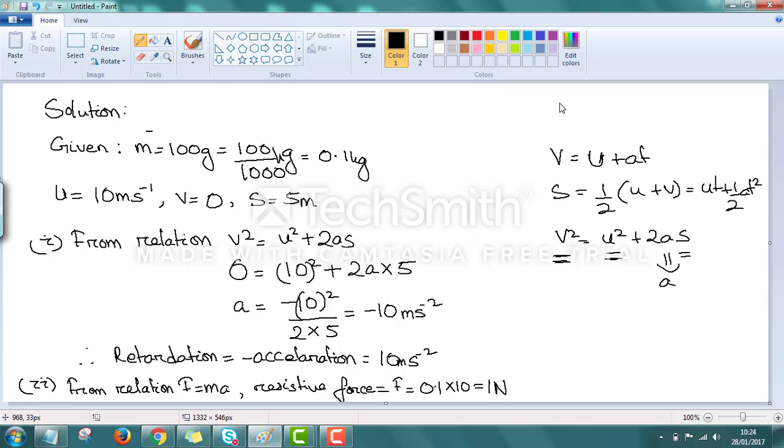And it is coming as negative. Children, whenever acceleration comes as negative, you have to consider it as retardation. That is, retardation is equal to 10 meter per second square.